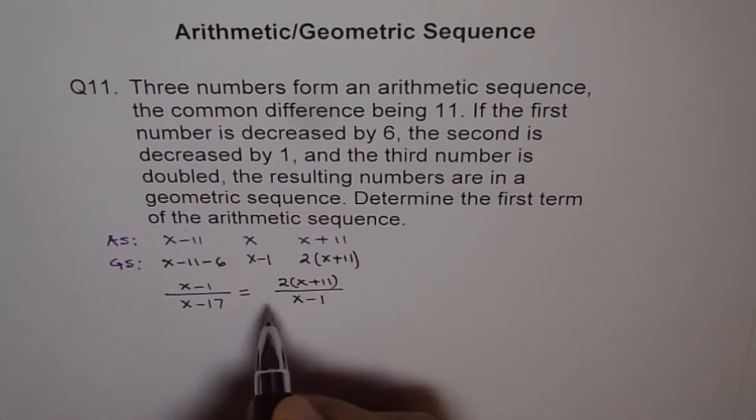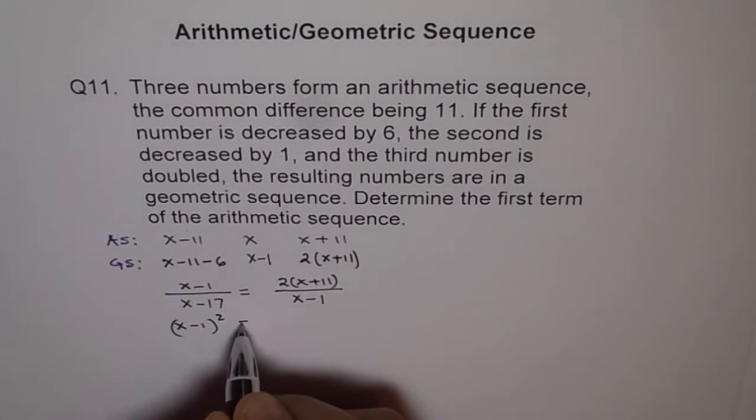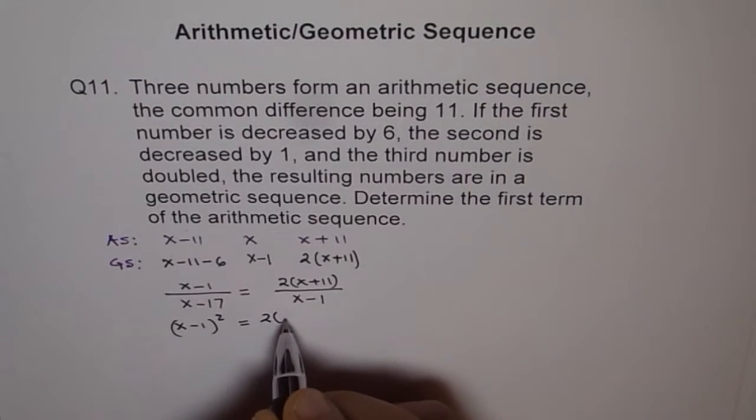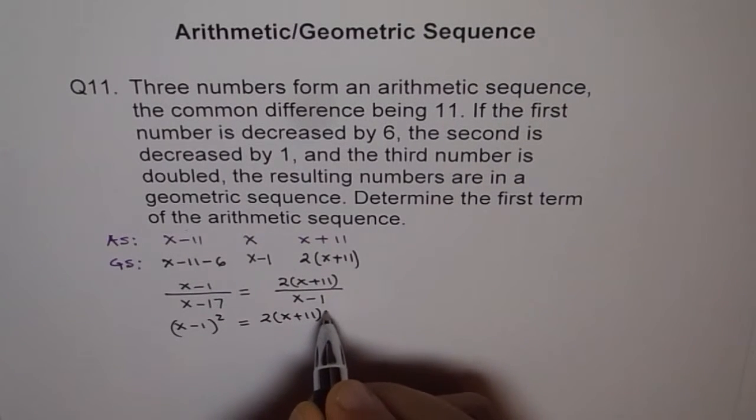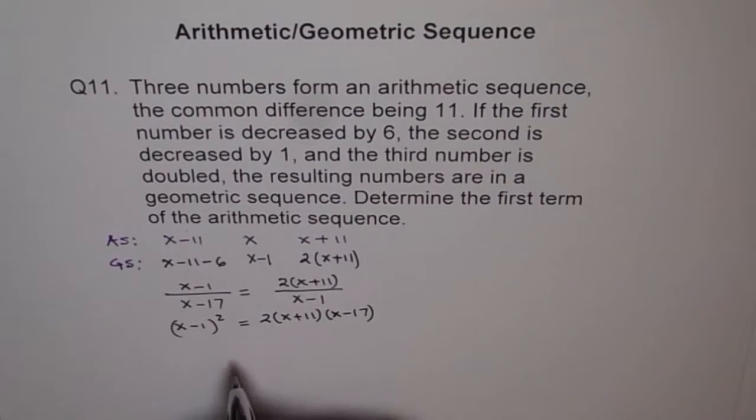Now we will cross multiply to solve for it. So we get x minus 1 whole square, when you do this times this, equals to 2 times x plus 11 times x minus 17, right?